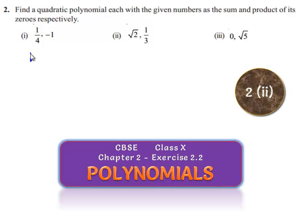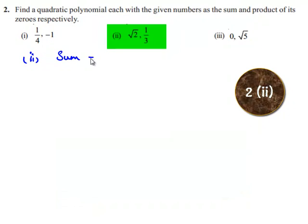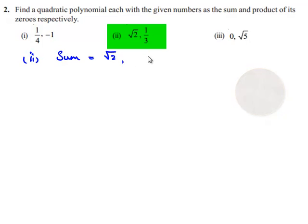Now, coming to the second bit, the sum of the zeros given is root 2 and the product is 1 by 3.